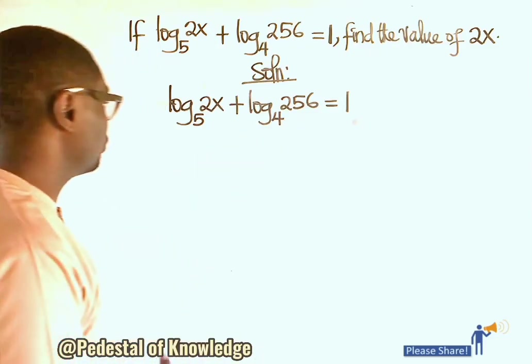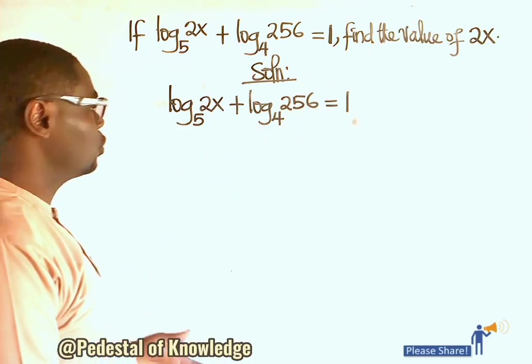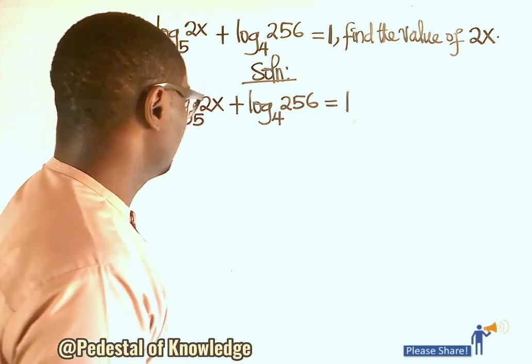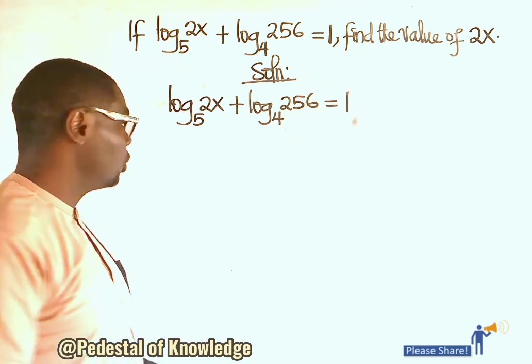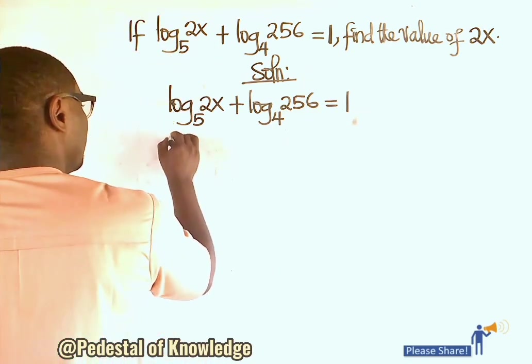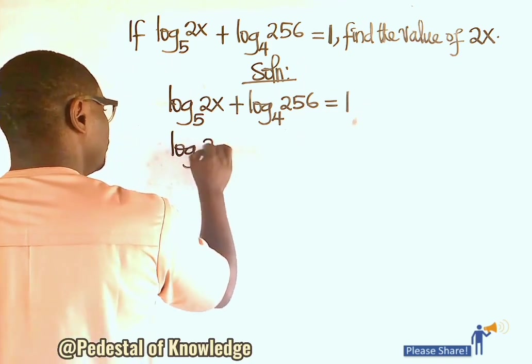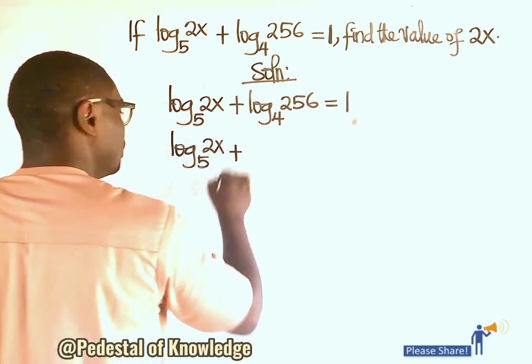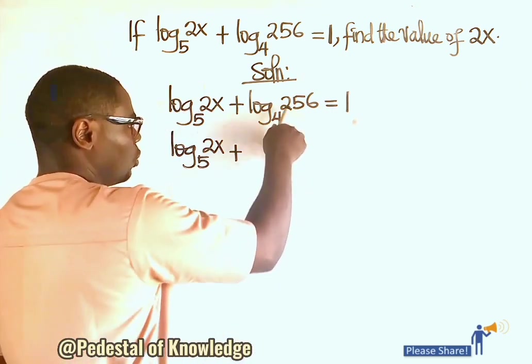Solve the equation log base 5 of 2x plus log base 4 of 256 equals 1. Now, it's very simple. What we need to do here is log base 5 of 2x plus, remember, log base 4 of 256.